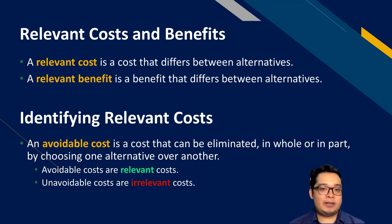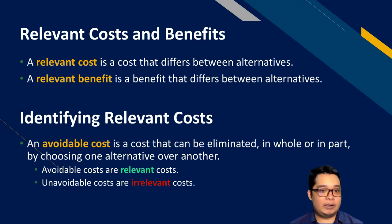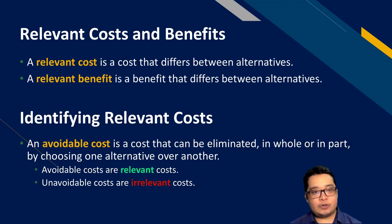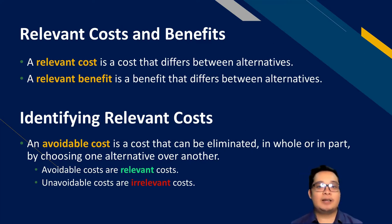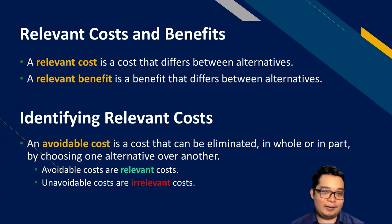A relevant benefit is a benefit that differs between alternatives. A classic example is sales — will this decision bring additional sales or not? If one course of action brings in additional sales, sales is a relevant benefit, because one alternative has zero sales and the other has positive sales. They differ between alternatives, and therefore it is a relevant benefit.